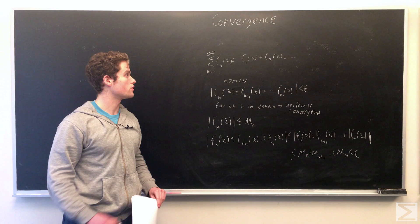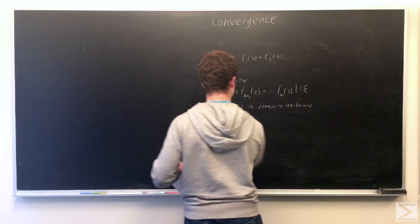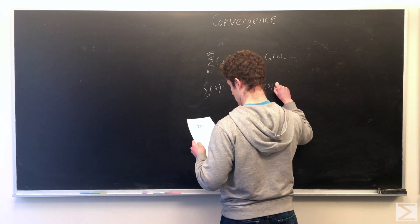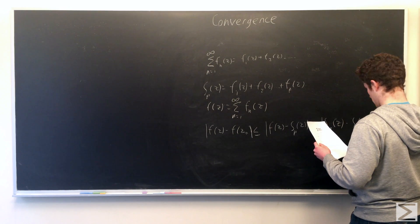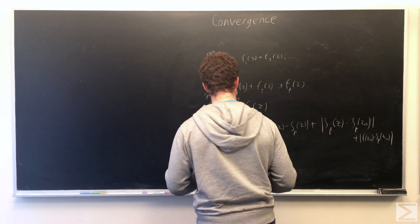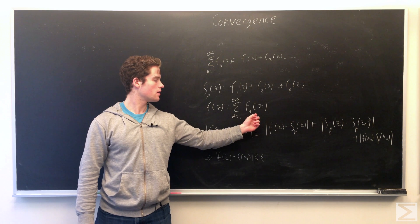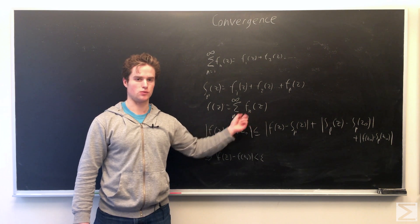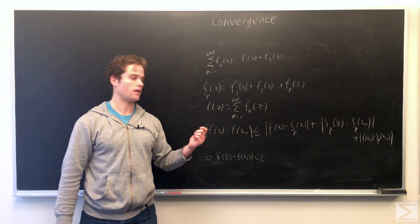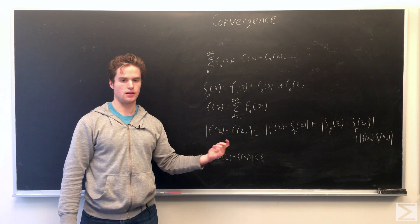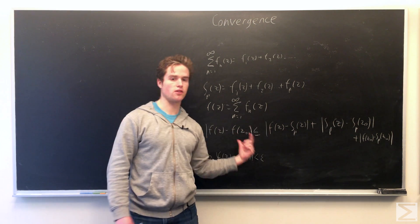One other thing we can show is that a uniformly convergent series converges to a continuous function. We want to prove, saying F of z is our infinite sum of all our functions from n equals one to infinity, that the moduli of F of z minus F of z naught, for moduli of z minus z naught less than delta, this will be less than epsilon. So we break this up into three sums. Note by the triangle inequality, this is true.